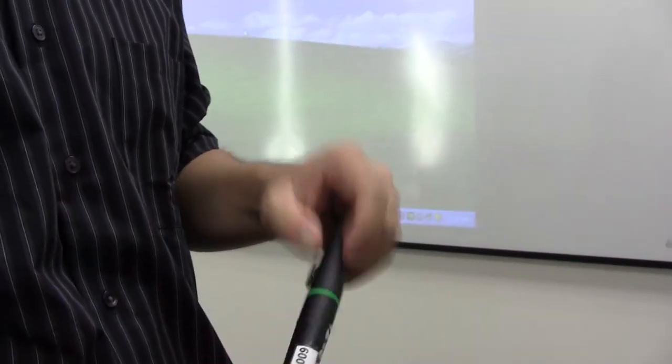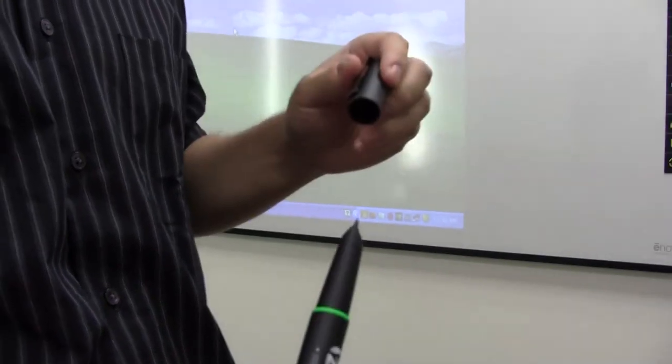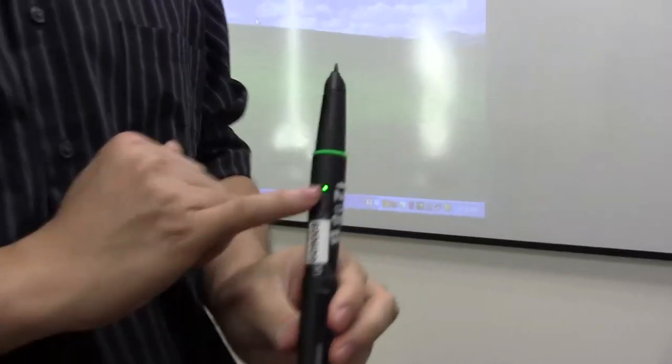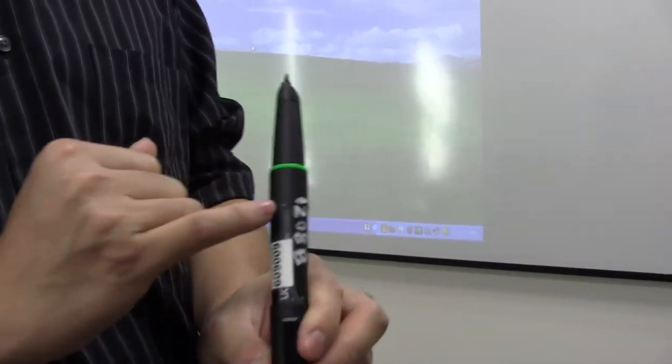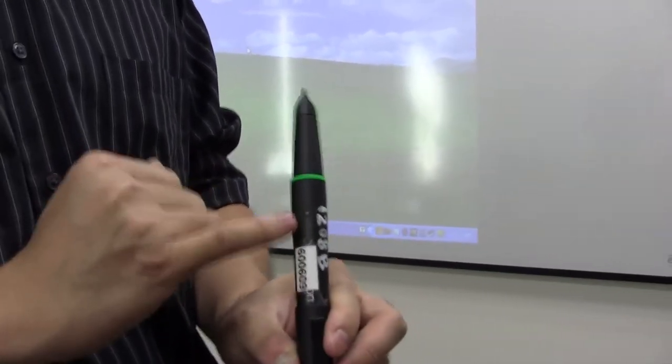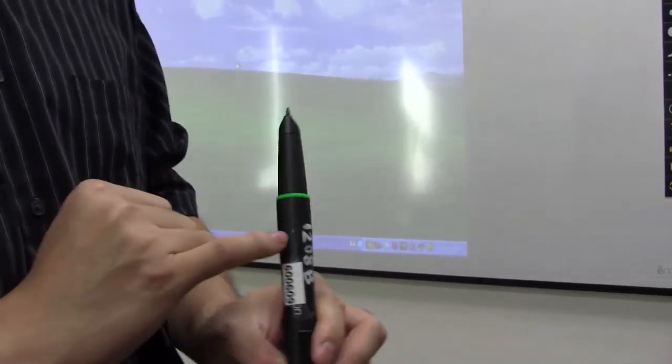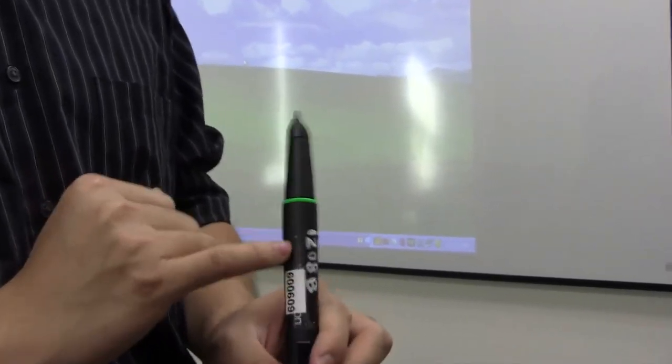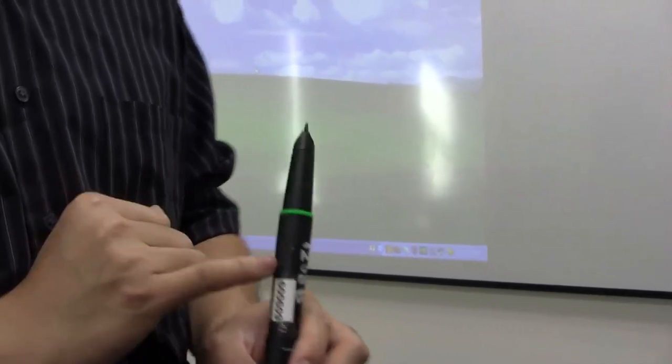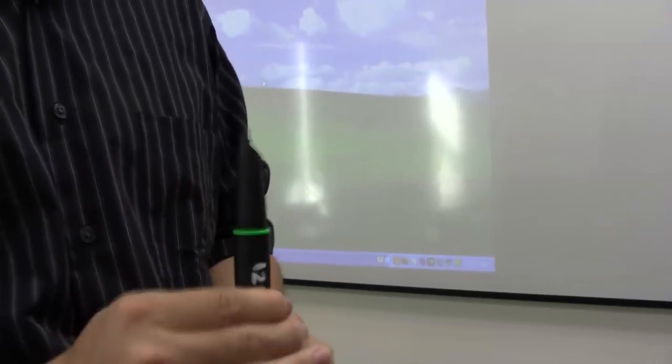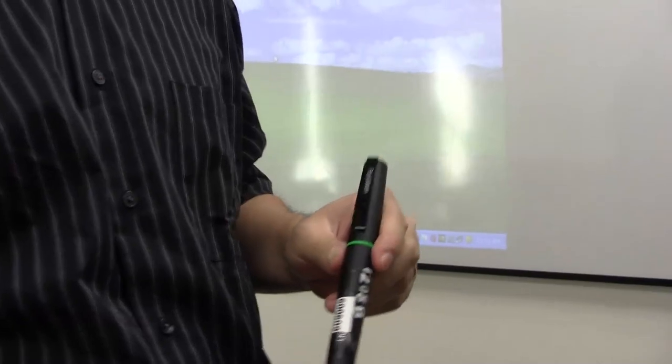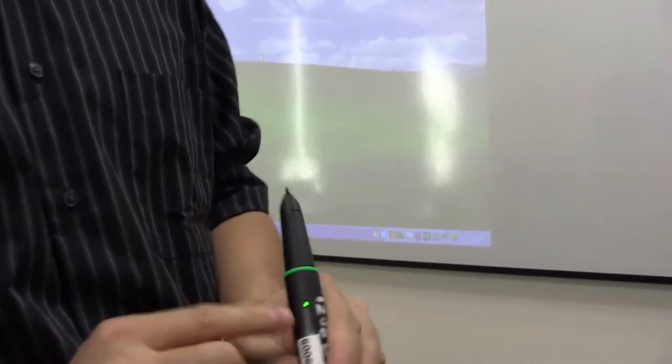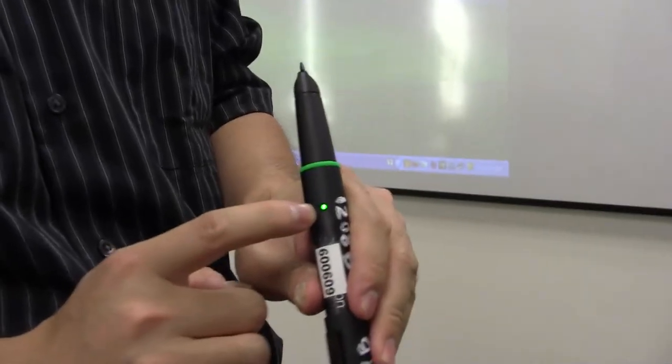The first thing you want to do is open the cap of the pen. Once you see the light is green solid, that means the pen is ready to be used. If you see a green light flashing, then that means the pen is not yet ready or there's something wrong with the connection. In that case, close the cap again, wait for a couple seconds, reopen the cap again, and wait till the light is green solid like this.